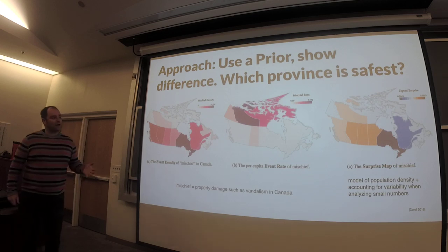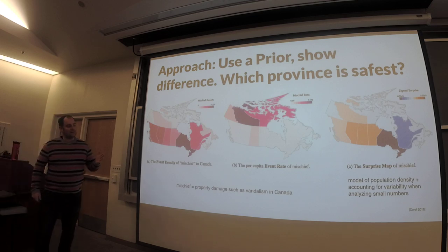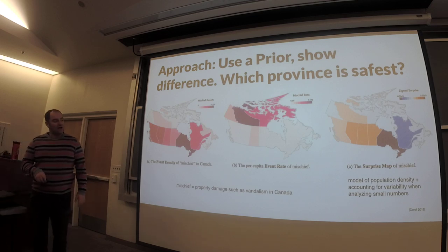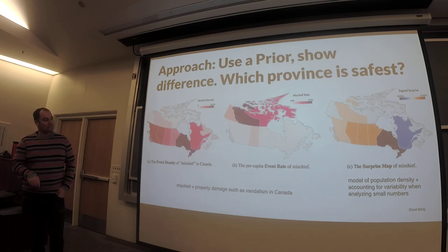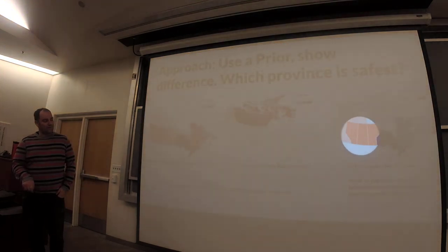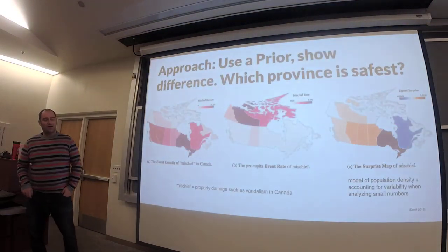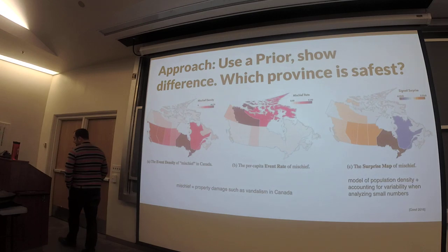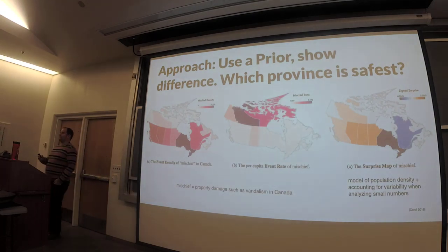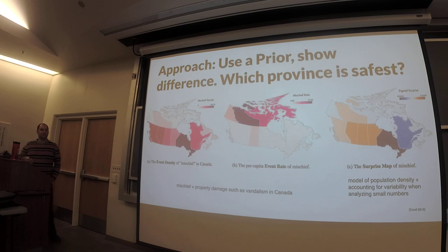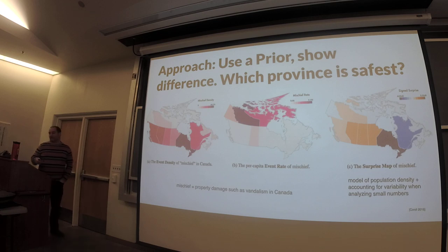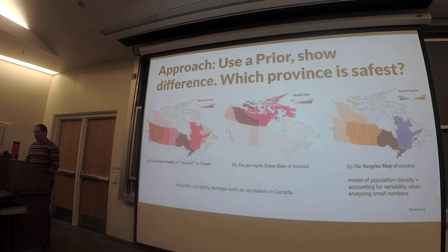They have a model of population density plus accounting for the variability when analyzing small numbers. If you do that, you get a signed surprise map showing slightly higher rates of mischief in western Canada and slightly lower rates in eastern Canada. Of course, this principle applies not only to maps but to any dataset where you need to analyze smaller units alongside bigger units — you might want to apply a correction like this.